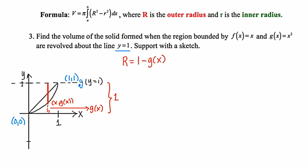Now focusing on the inner radius, I'll grab my green pen and place it on the axis of revolution, y equals 1, projecting straight down to the nearer of the two curves, continuing with a dotted line to the x-axis. This point is x comma f(x), and the dotted portion is f(x) — starting at the origin, going over x, and up f(x). The distance from the x-axis to y equals 1 is 1 unit, so the solid green segment is 1 minus f(x), making little r equal to 1 minus f(x).